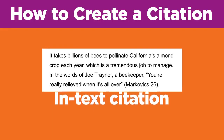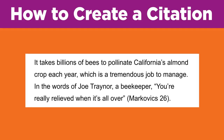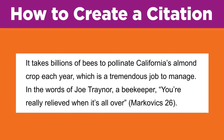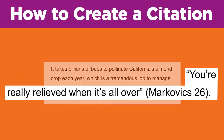Let's take a look at this example from a research paper that uses a quote from the book The Honey Bee's Hive by Joyce Markovics. 'It takes billions of bees to pollinate California's almond crop each year, which is a tremendous job to manage. In the words of Joe Trainer, a beekeeper, you're really relieved when it's all over.' (Markovics 26). Notice the in-text citation — it includes the author's last name, Markovics, and the page number of the quote, 26, enclosed in parentheses.